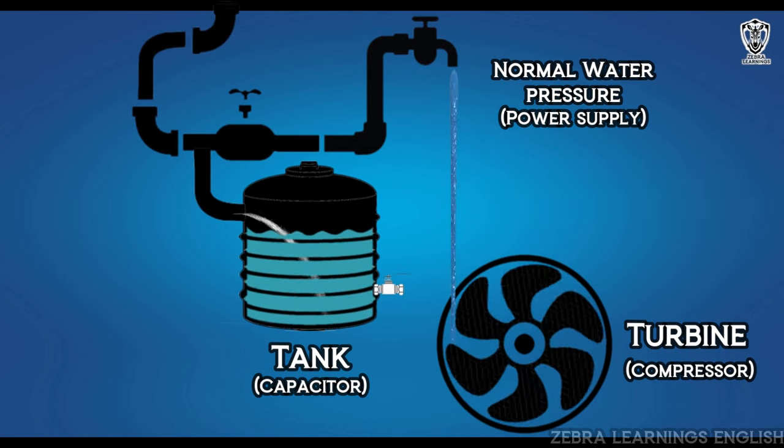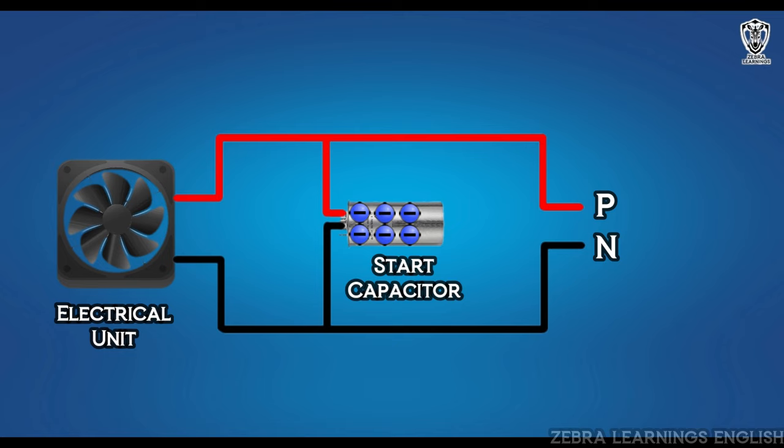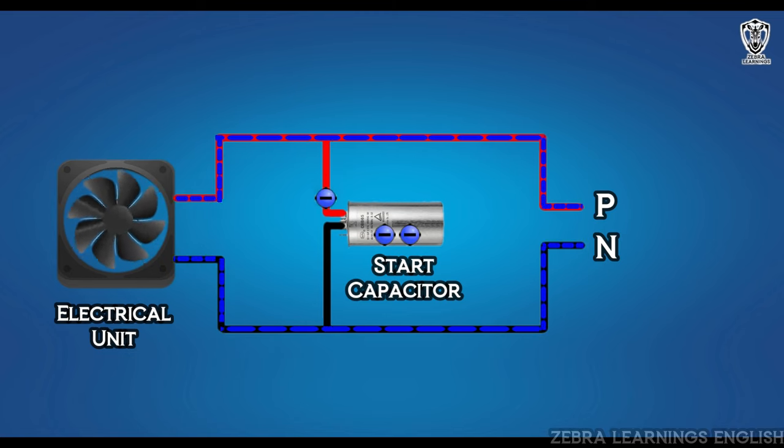Start capacitor works like this water tank. The capacitor takes the required electrical charges from the power supply and stores them. When the unit starts, the capacitor sends the necessary charges to the compressor, the compressor starts, and then capacitor cuts off. After the compressor starts running, the compressor will continue to run with normal power from the power supply. After the capacitor is cut, it stores the electrical charges from the power supply for next time use.